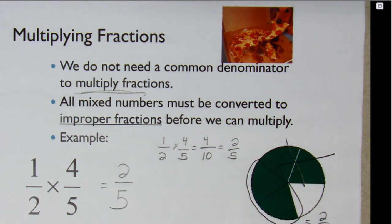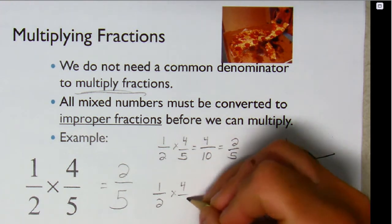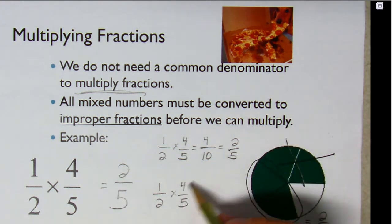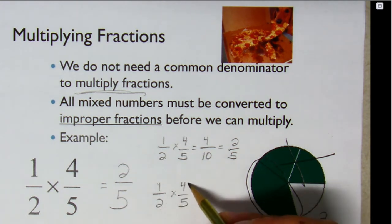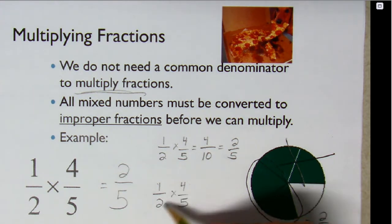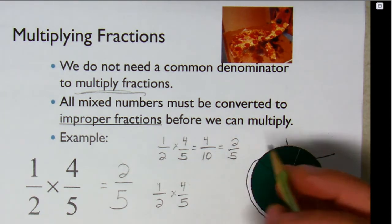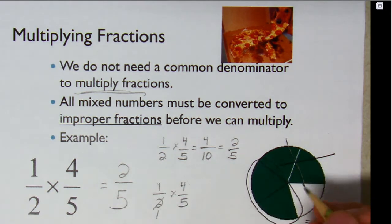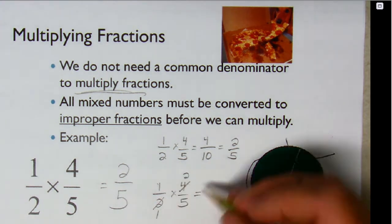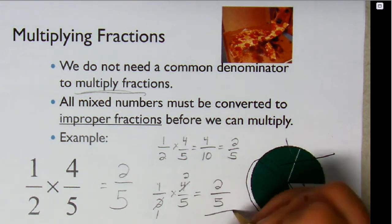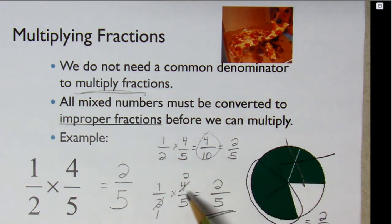There's a slightly better way: before multiplying across, look diagonally for any common factors to cancel. With one-half times four-fifths, one and five don't reduce, but four and two share a factor of two. Divide two by two to get one; divide four by two to get two. Now multiply across: one times two is two in the numerator, one times five is five in the denominator — giving two-fifths directly. Canceling before multiplying keeps the numbers smaller.